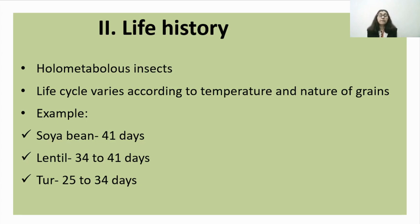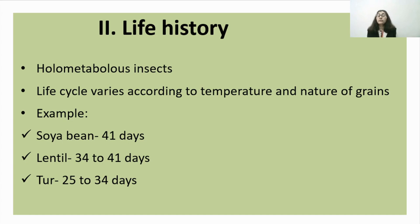Pulse beetle is a holometabolous insect, meaning it shows complete metamorphosis. All four stages of the life cycle are present: egg, larva, pupa and adult. The life cycle varies according to temperature and the nature of the grains. For example, in soya bean the life cycle is completed in 41 days, in lentil it is 34 to 41 days, and in toor/arhar it is completed in 25 to 34 days.